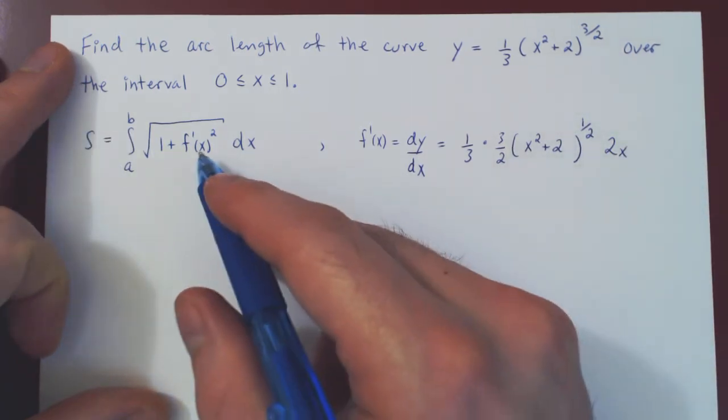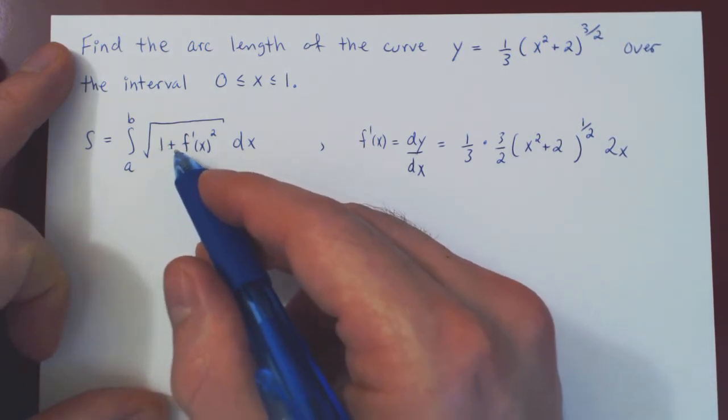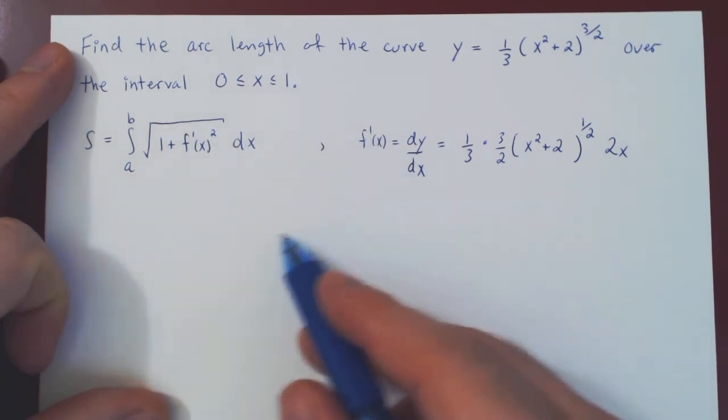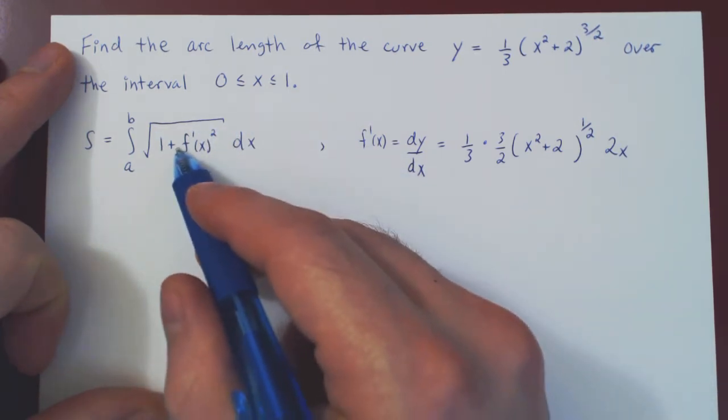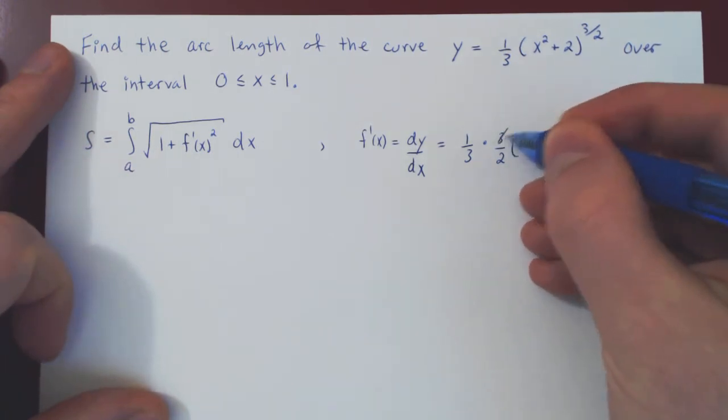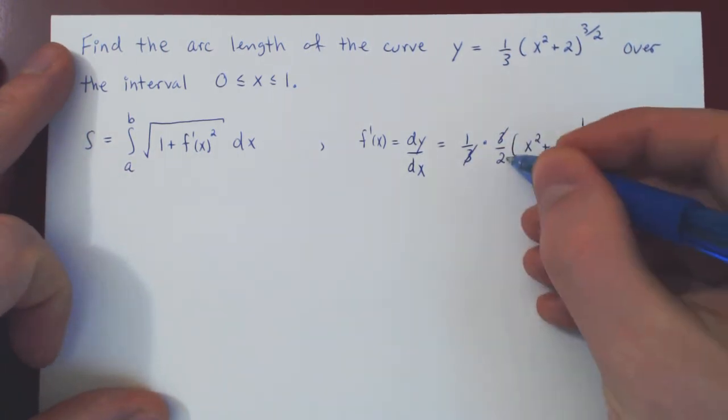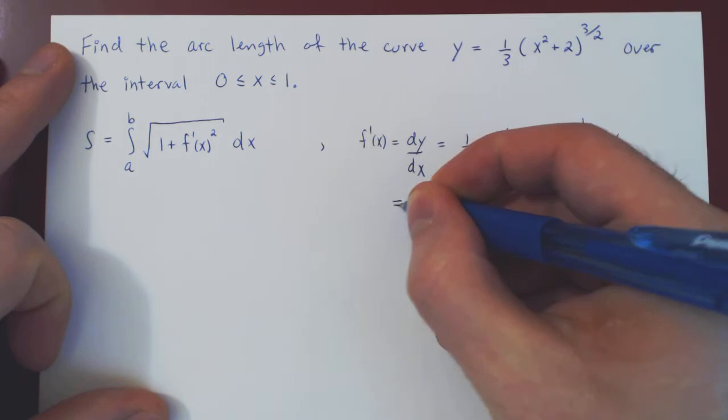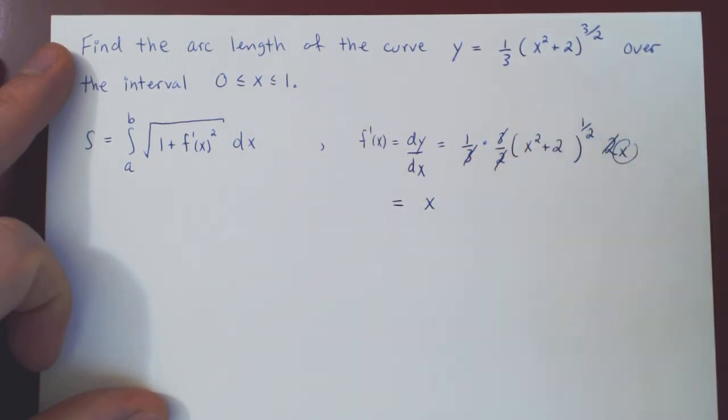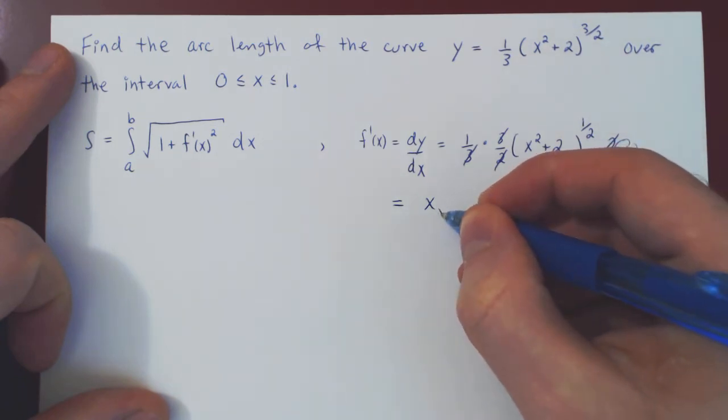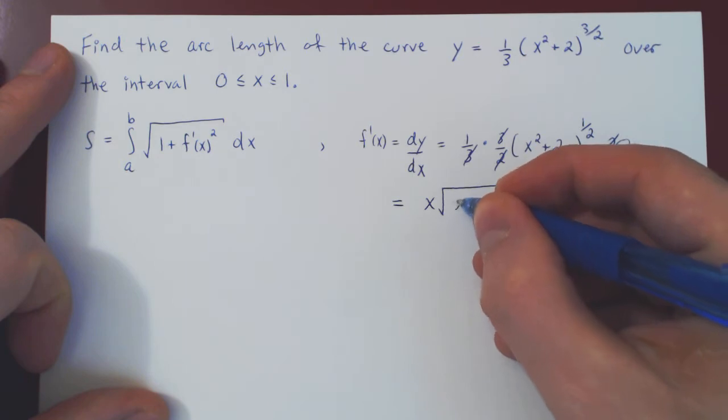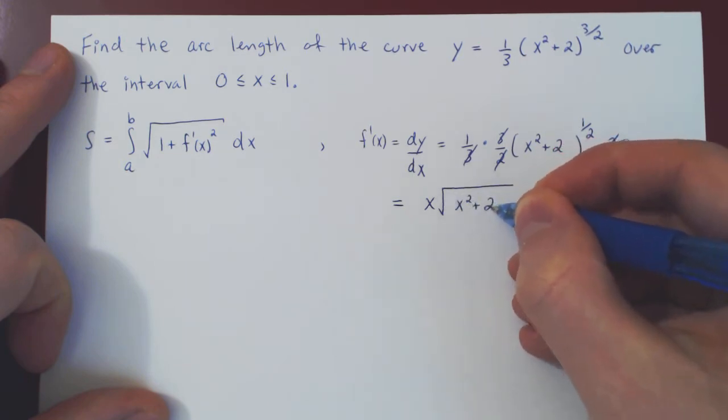Of course, before we plug it in, we'll simplify. Always simplify the 1 plus the derivative squared. Once it is fully simplified, then, and only then, plug into the integral and try to evaluate. So we have 3 over 3 cancels, 2 over 2 cancels. So all we're left with is, I'll put the x term first. And the power of 1 half, of course, is just the square root of x squared plus 2.